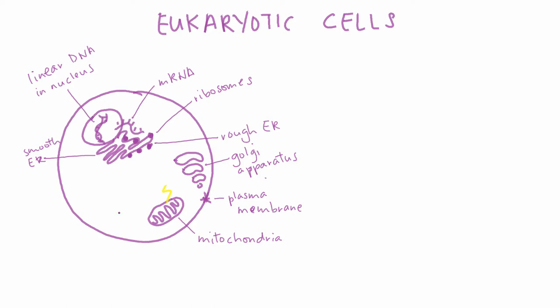When components of the cell reach the end of their life, they are dismantled and recycled by organelles called lysosomes. Lys means to break, and these organelles are filled with enzymes that break things down.